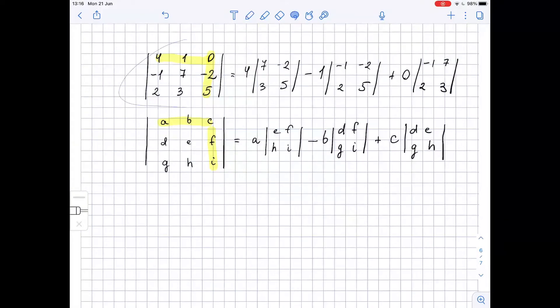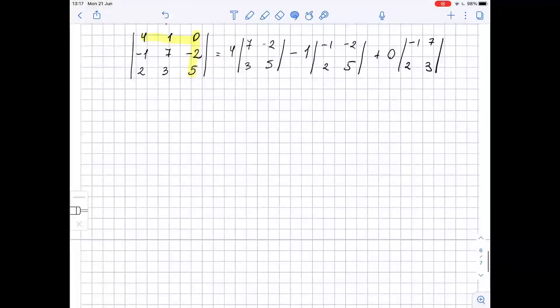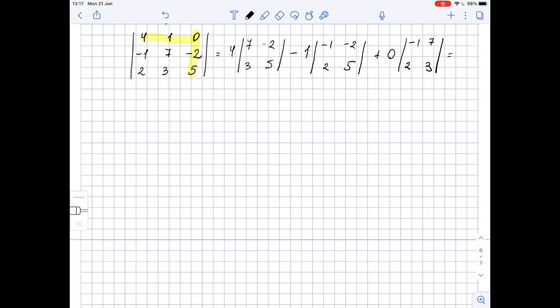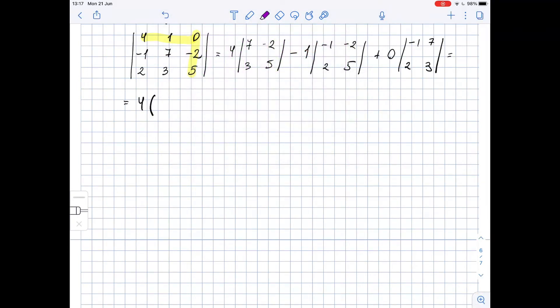Well, now to calculate this we need to find the determinants of 2 by 2 matrices. So this equals 4 times, again to find the determinant of a 2 by 2 matrix we need to multiply these elements and then subtract the product of the other two elements.